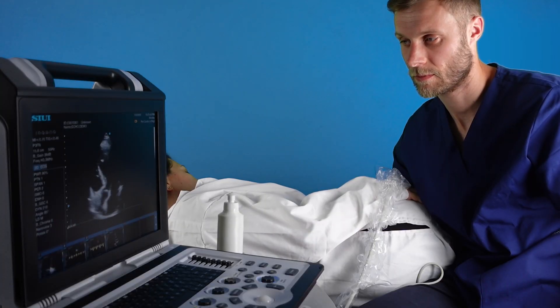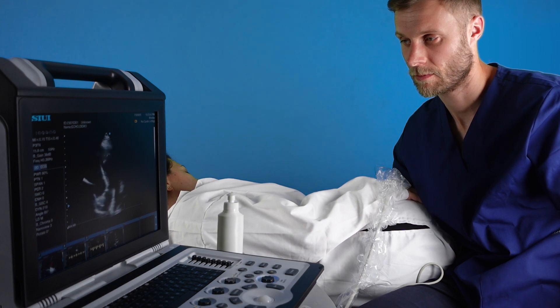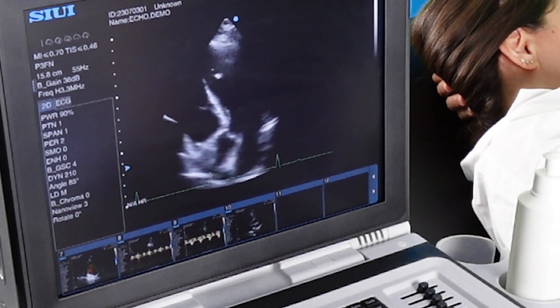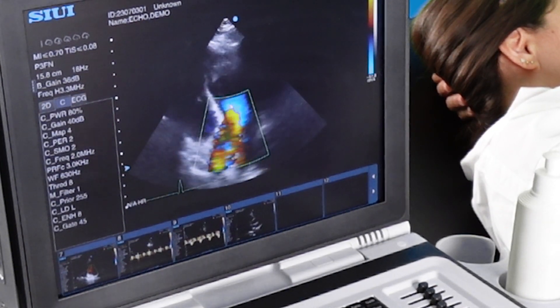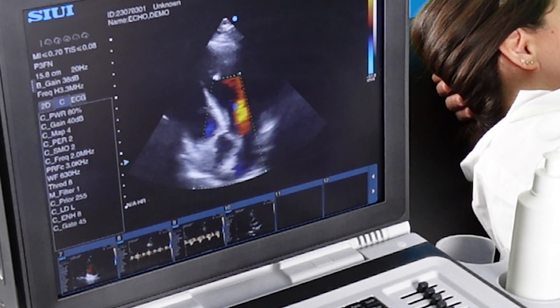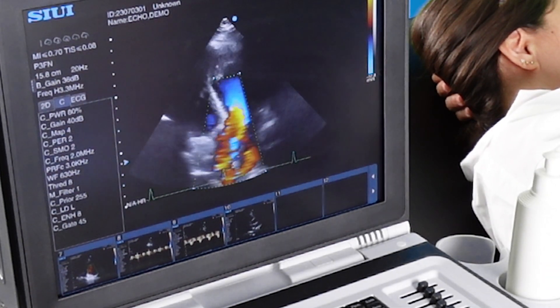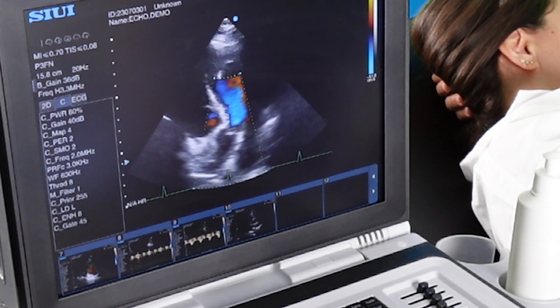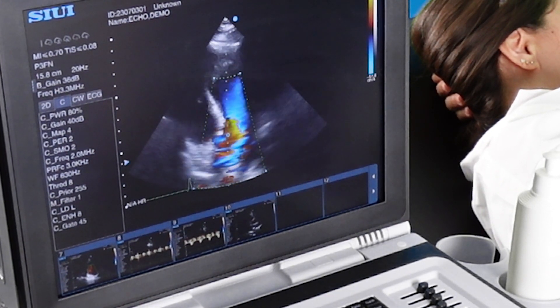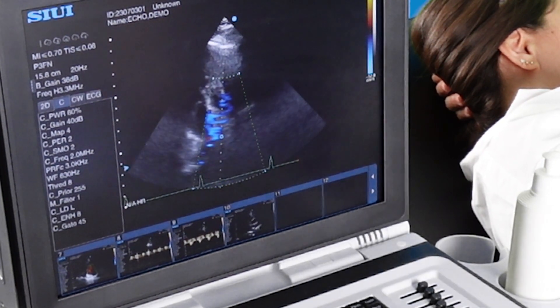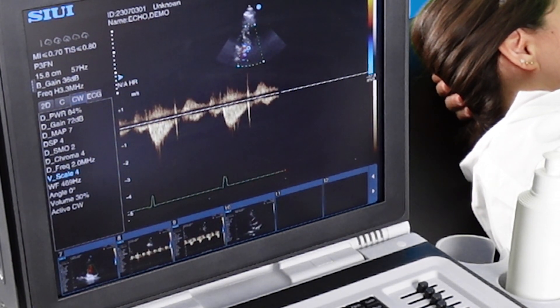Now we have a five chamber view focusing on the left ventricular outflow tract and aortic valve. Color Doppler again confirms that this patient does not have aortic regurgitation or any signs of stenosis. Color Doppler again over the tricuspid valve.